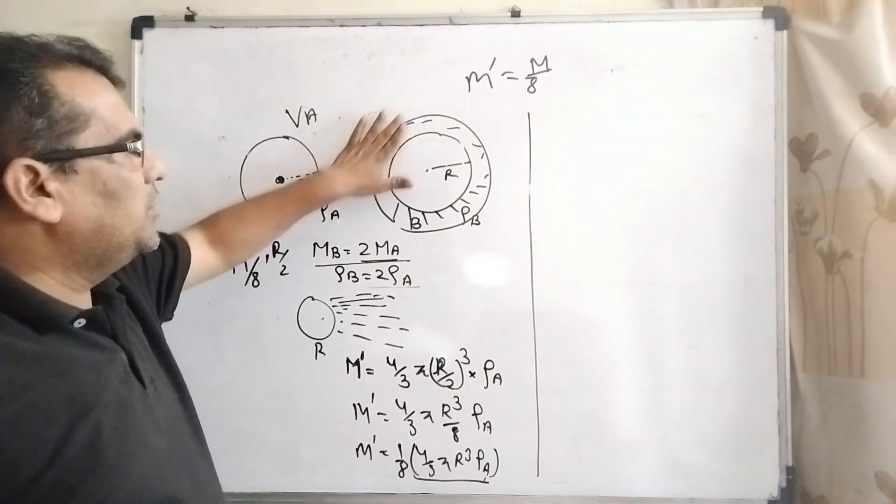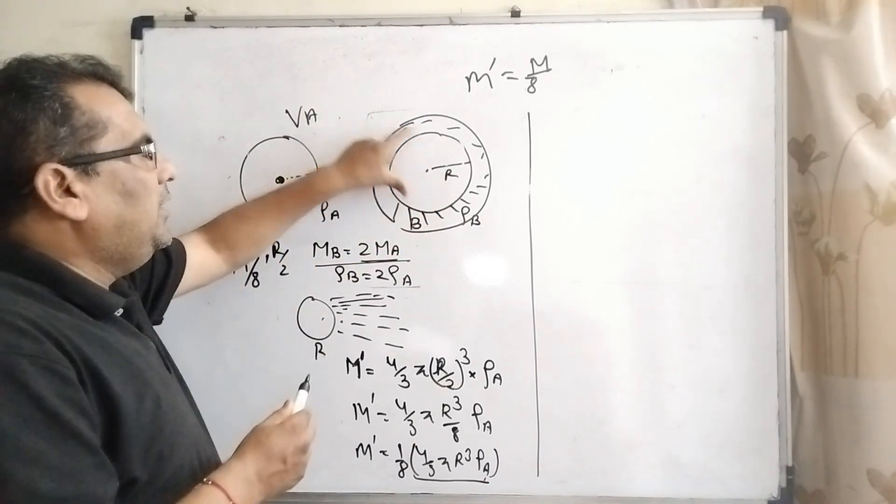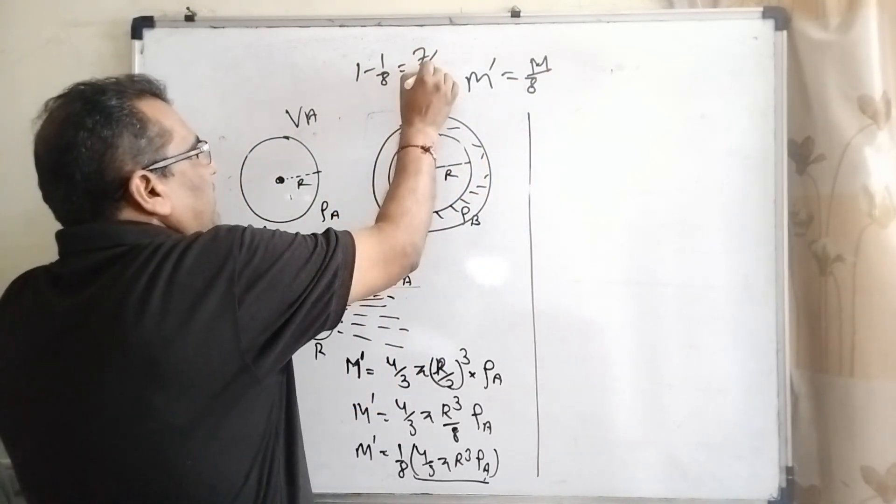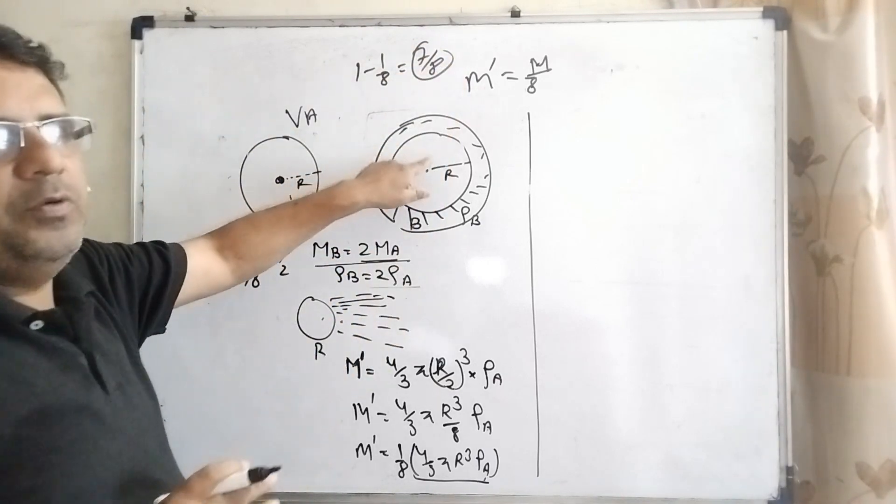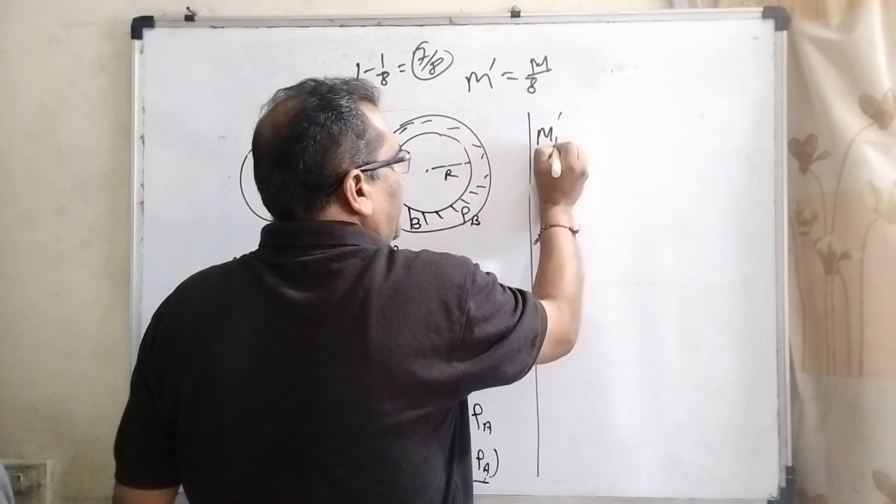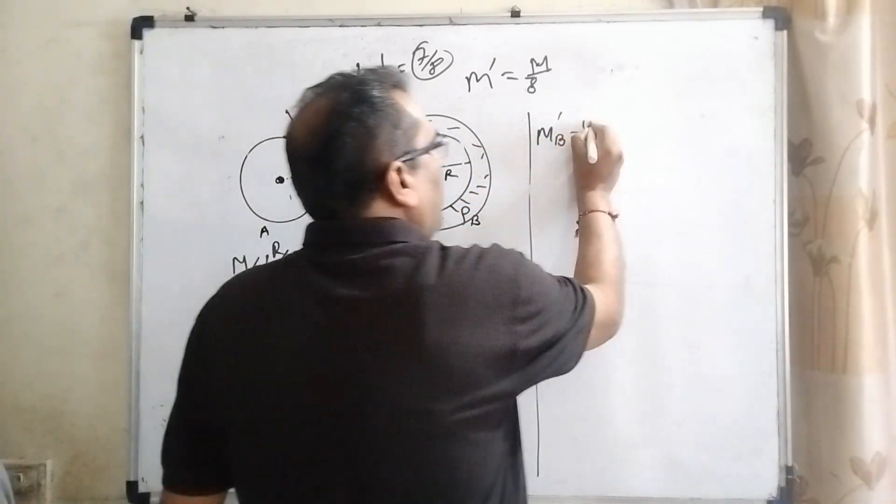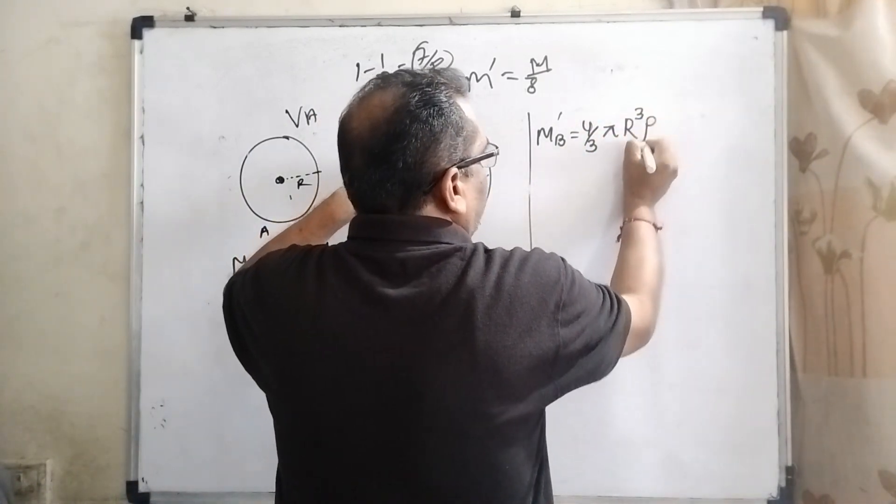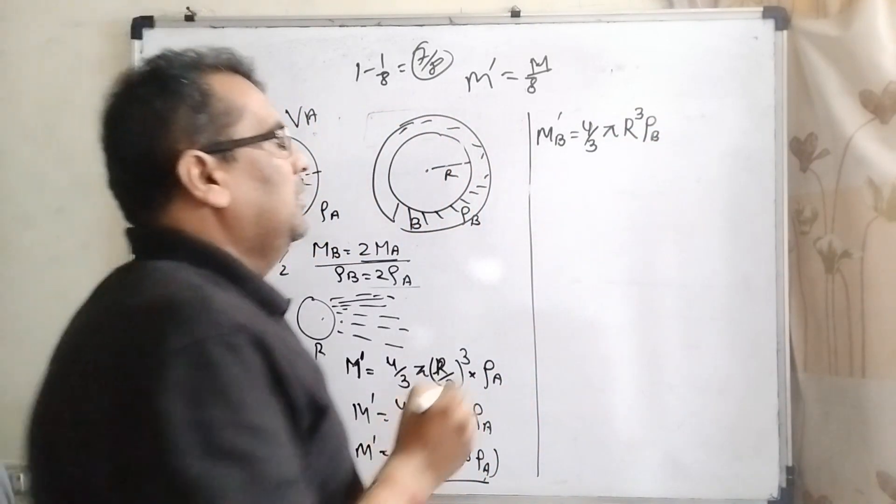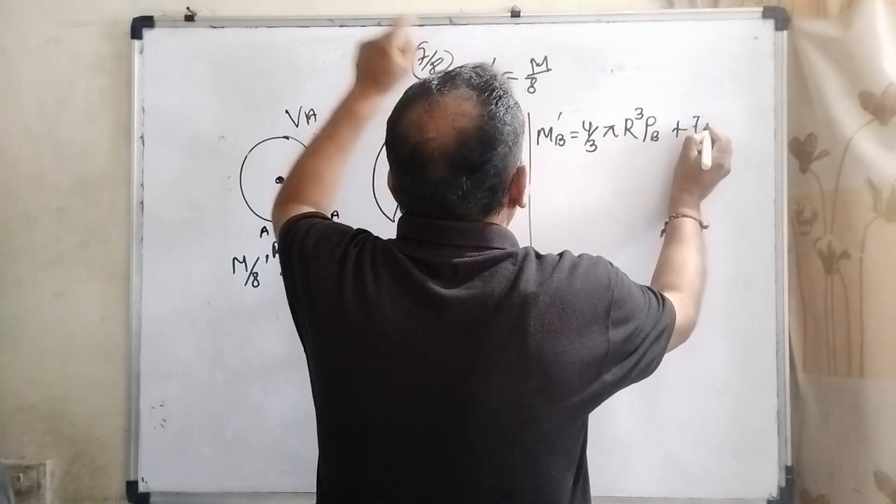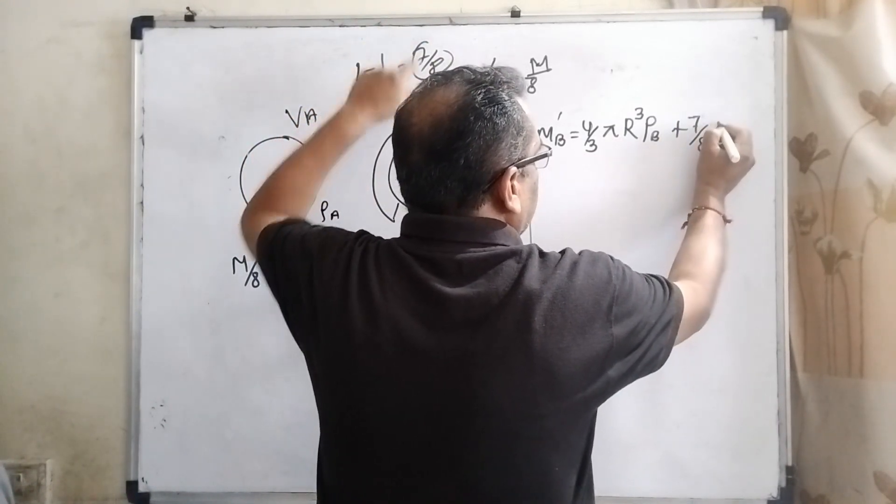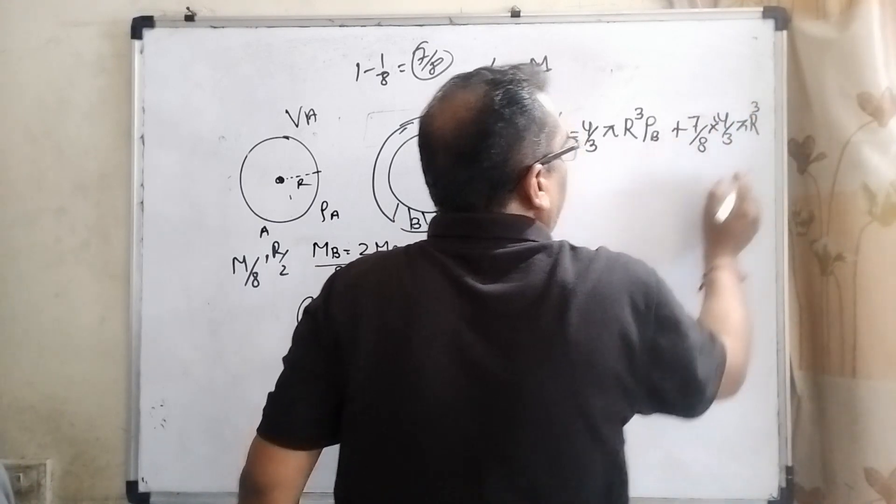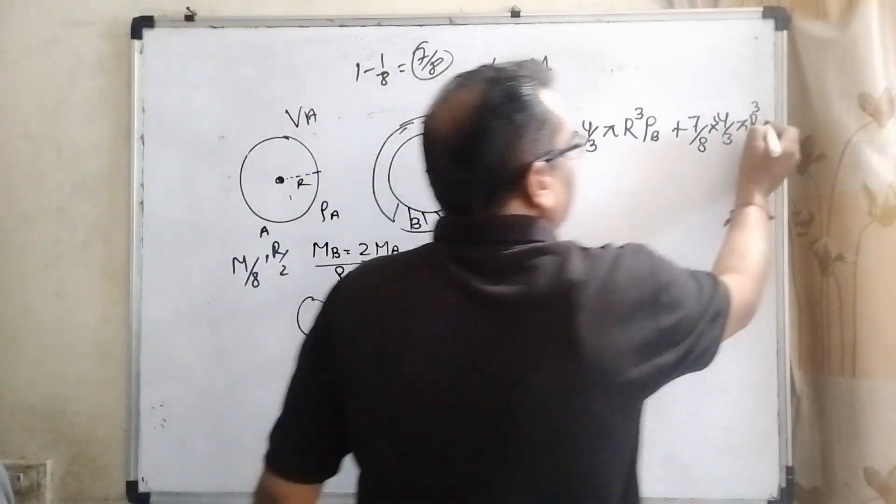Now this part is deposited on star B. How much mass is deposited? You can see that 1/8 part remaining means 1 minus 1/8 equals 7/8 of the mass of this star is deposited here. The new mass M'B equals 4/3 π R³ ρB plus 7/8 times 4/3 π R³ ρA.